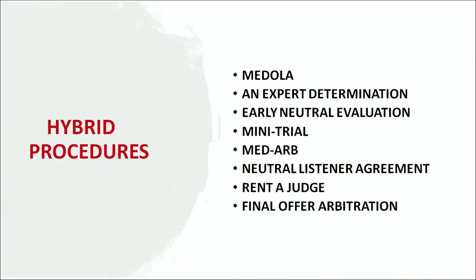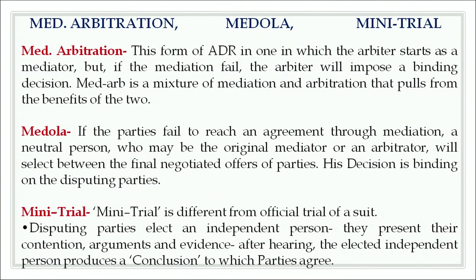Let us now discuss the various hybrid procedures for dispute resolution. These ADR techniques use a combination of two varieties of ADR. First, we have med-arb — a combination of mediation and arbitration. In med-arb, the arbitrator starts as a mediator in the beginning, but if the mediation fails, the arbitrator will impose a binding decision. Med-arb pulls from the benefits of both mediation and arbitration. The second hybrid procedure is medulla — if the parties fail to reach an agreement through mediation, a neutral person, who may be the original mediator or an arbitrator, will select between the final negotiated offers of the parties, and this decision is binding on the disputing parties.